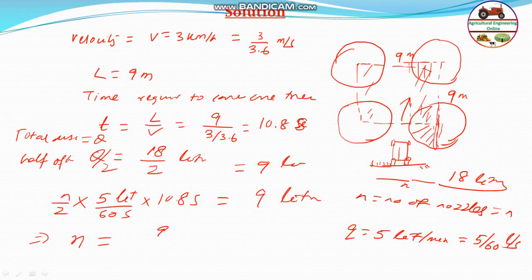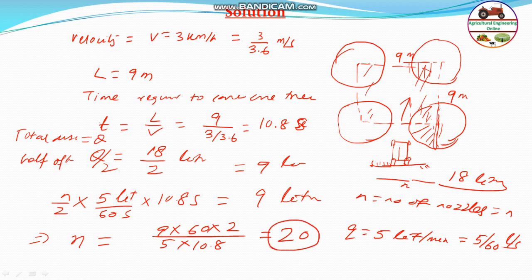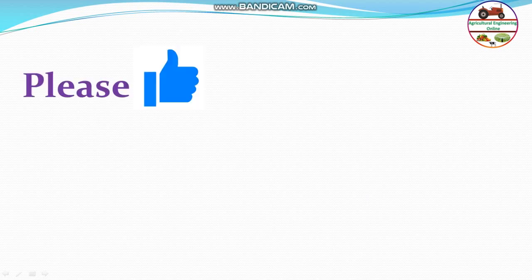N = 9 × 60 × 2 divided by 5 × 10.8, which equals 20. So 20 nozzles are needed. It is asked: how many nozzles will be needed if half a row is sprayed from each side of the machine? The number of nozzles is 20 on the boom. This is the answer for this question. Hope you get the answer - please like and subscribe to my channel.